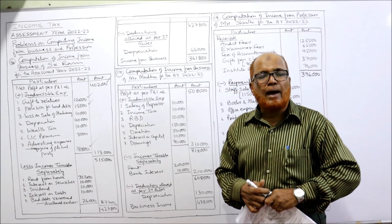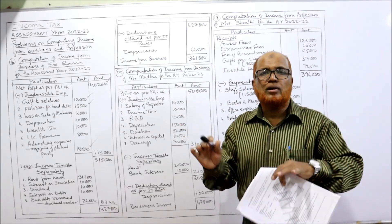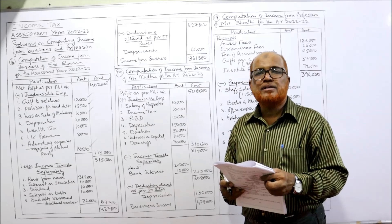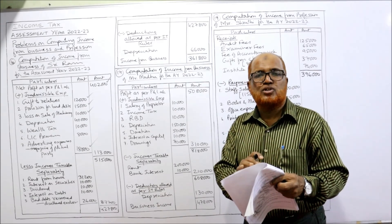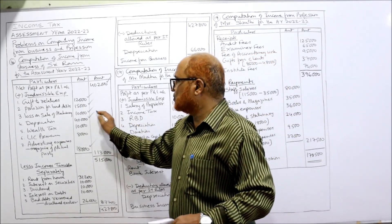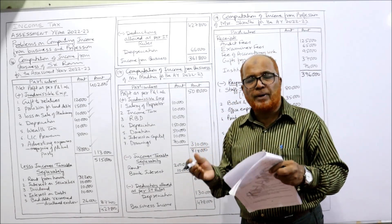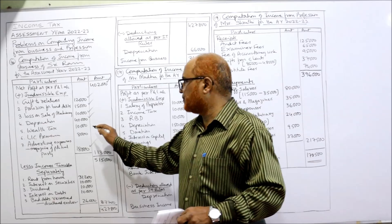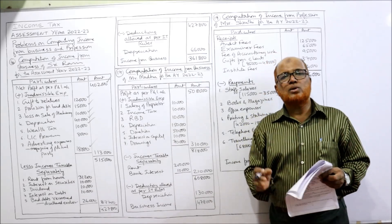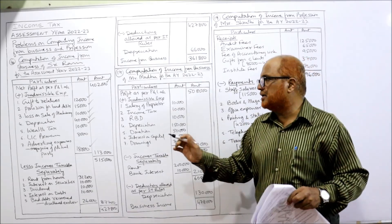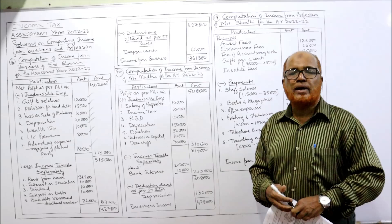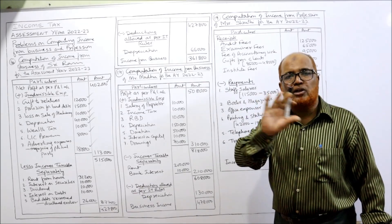Loss on sale of machinery is a capital loss — capital losses are not allowed as deduction, so it is disallowed. Depreciation debited to the profit and loss account is disallowed since we use the IT rules depreciation later. Wealth tax is a personal tax of the assessee, not allowed as deduction. Life insurance premium is also a personal expense of the assessee — disallowed.